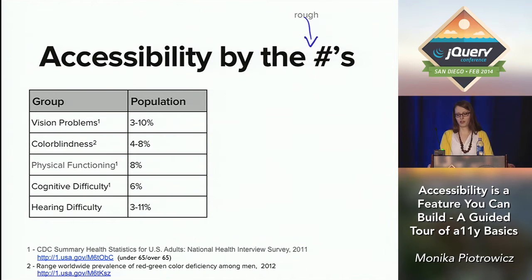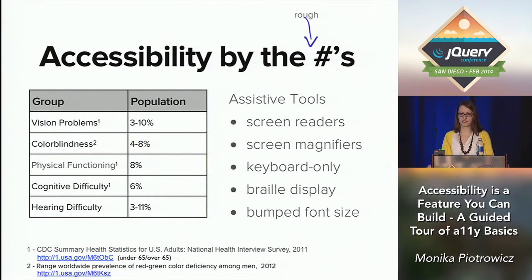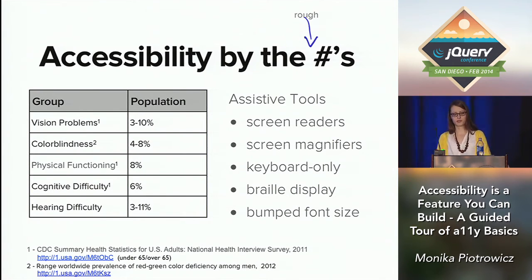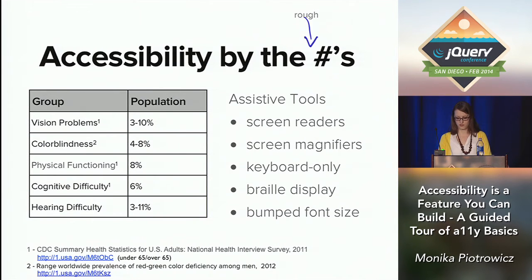So who are we considering when we use this umbrella term accessibility? A common misconception might be that it's just screen reader users. But as we can see from these numbers and this list, it's actually a much more diverse group. And when we look at these numbers collectively, they're also big enough that no one can reasonably say that they don't have an accessibility audience, especially since these numbers are only going to start growing as the general population ages. The point isn't to just satisfy one particular group, but to make something that's more usable across all of them. And the good news is that a lot of the challenges these groups face can be solved with common solutions.